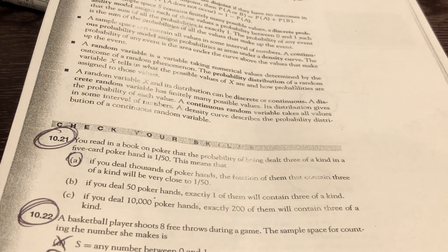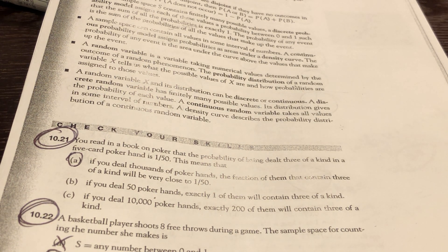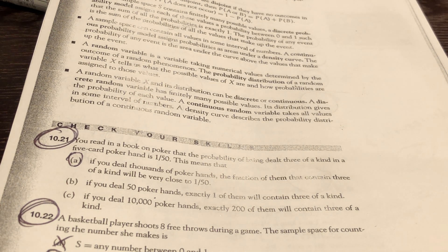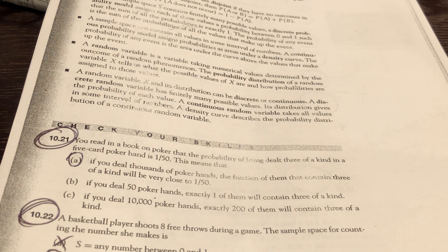Let's talk about 10.21 in your notes package. You're writing a book on poker that the probability of being dealt three of a kind is one out of 50. What does that mean? That means if you deal thousands of poker hands, the fraction of them that contain exactly three of a kind is going to be very close to one out of 50.